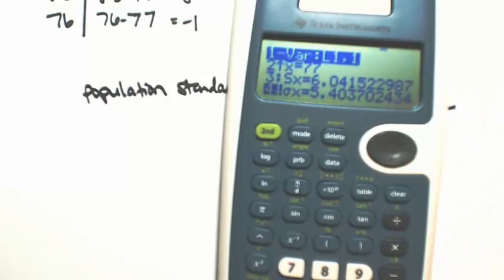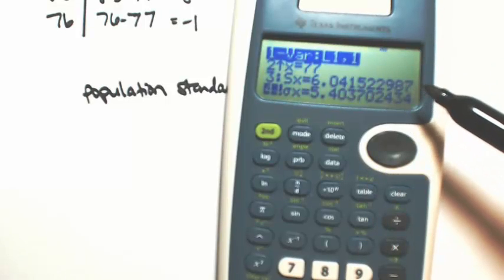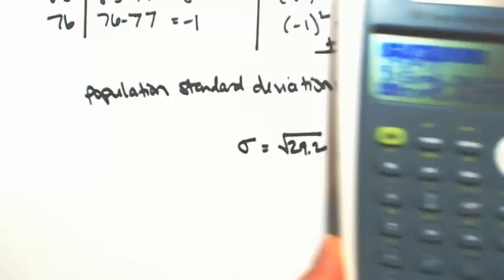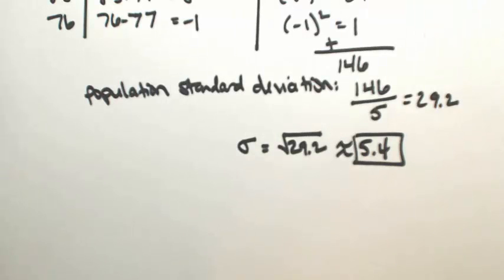You're going to find two types of standard deviations. The first one for S is called the sample. The second one is called sigma, which is population. That's what we were finding, which is about 5.4. And there it is.